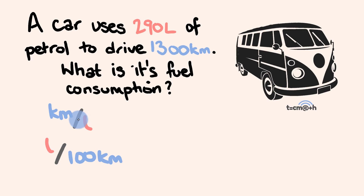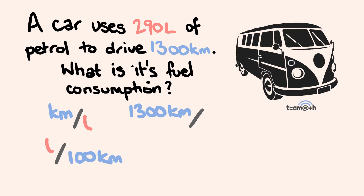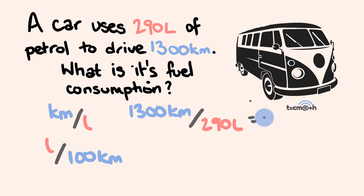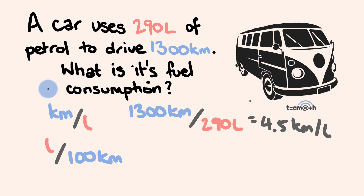We have kilometres divided by the number of litres. The number of kilometres we have is 1,300 kilometres, and this is going to be divided by the number of litres — 290 litres. That's going to be 4.5 kilometres per litre. I just followed this: kilometres divided by litres gives kilometres per litre.